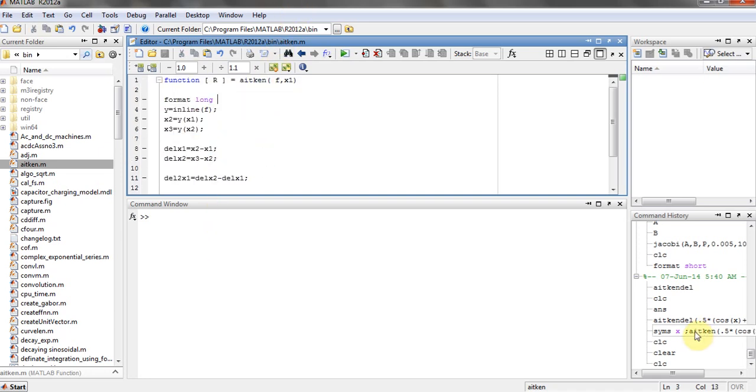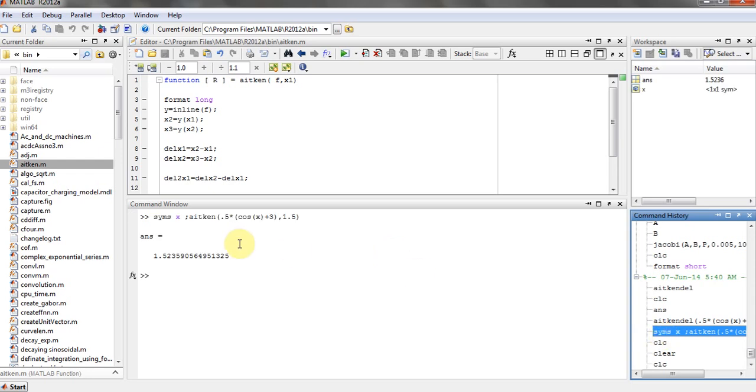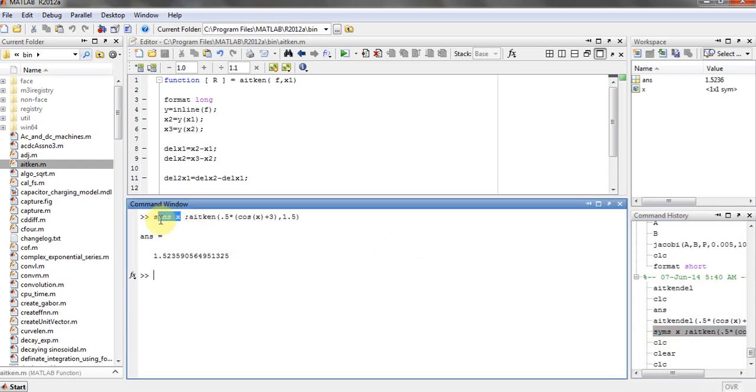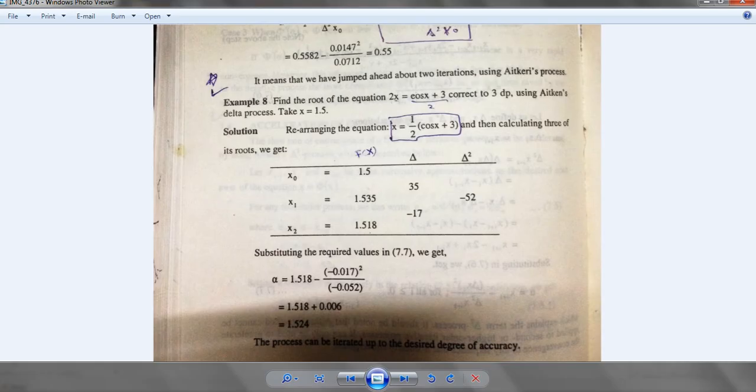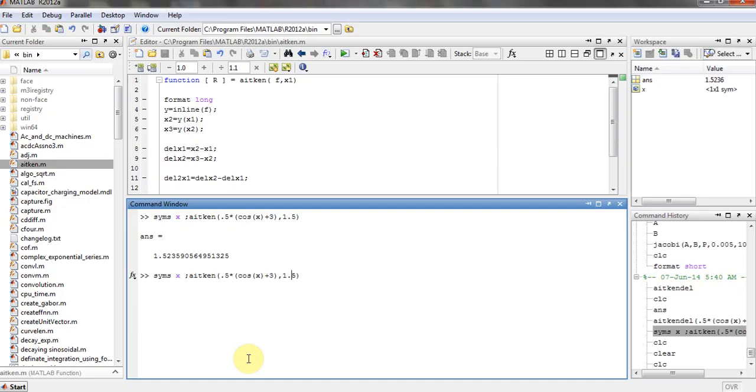So here's my code. You can also write it, it's a very easy code, and you can also download it. I will just upload it in the description. We declared x symbolically, and then we just use the Aitken's function to find the roots. Our initial guess or x naught will be 1.5, and then here's the function cos x plus 3 into 0.5. And we'll get 1.5235, which is quite close to 1.524. And you can also just change the functions and the values to check.